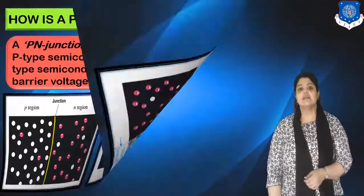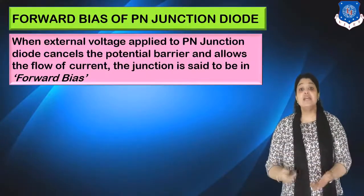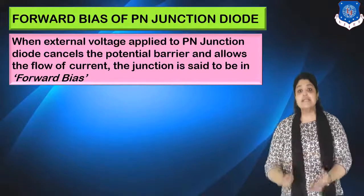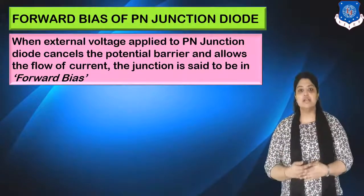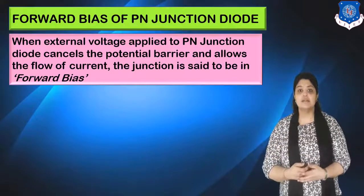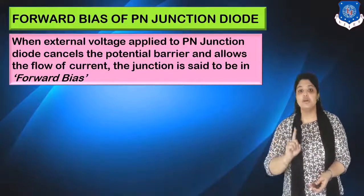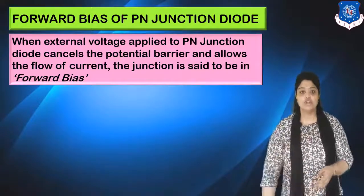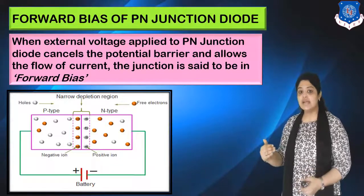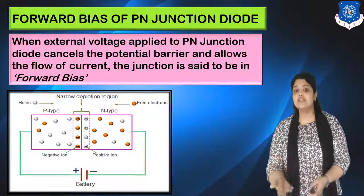Now let's see the forward bias of a PN junction diode. The basic definition says a PN junction diode conducts only in one particular condition. When external voltage is applied to a PN junction diode, it cancels the potential barrier and allows the flow of current — we say the junction is in forward bias. Because of the depletion layer, constant flow of electrons is not possible, and that is why we need to apply external voltage. The diagram shows the P side with majority holes, the N side with majority electrons, and the depletion layer in between.